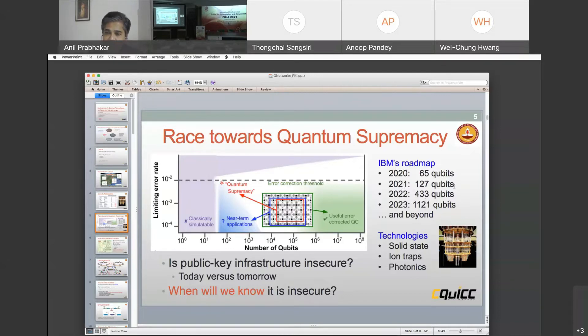If you look at such a roadmap and you understand that this is actually going to happen, you have to ask the question: is public key infrastructure insecure today? Will it be insecure tomorrow? And then I also ask another question: when will we know that it is insecure?